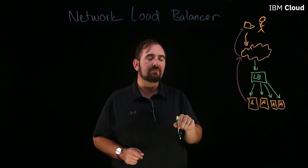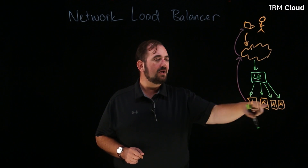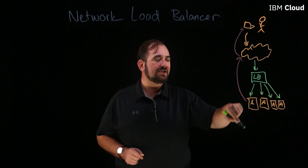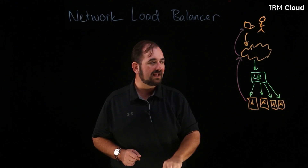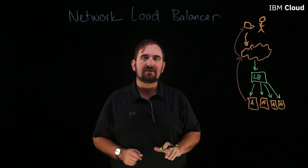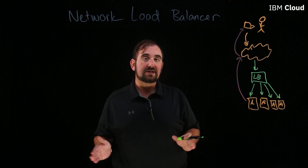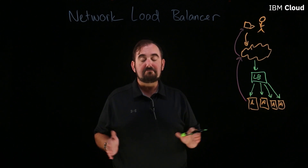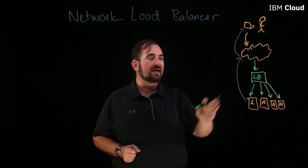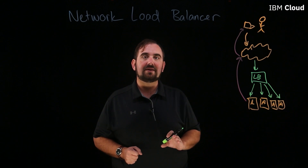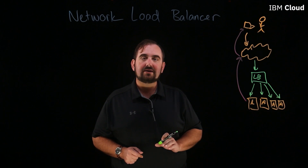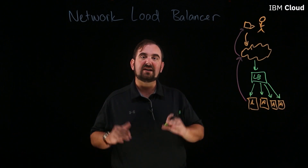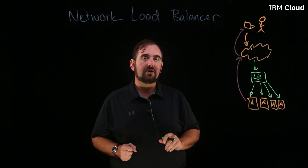The load balancer also collects information from your application servers. Those servers can communicate back to the load balancer, saying they're only being used 20% of the time. The load balancer can then dynamically auto-scale and turn that application server off if you don't need it, which helps drive down costs.